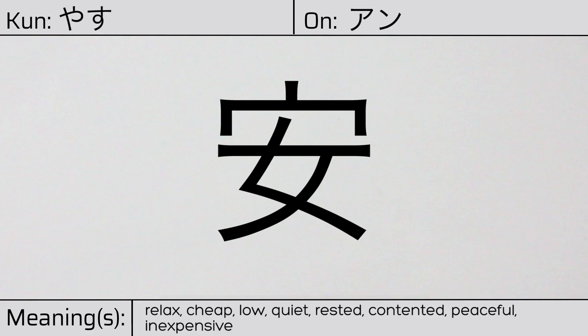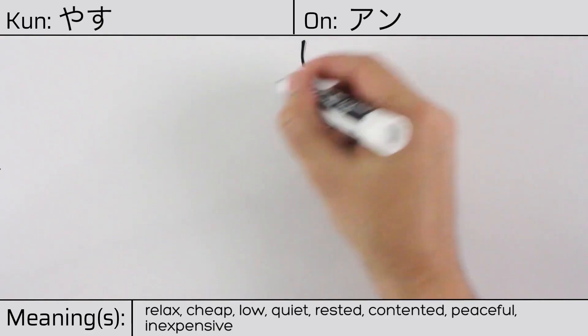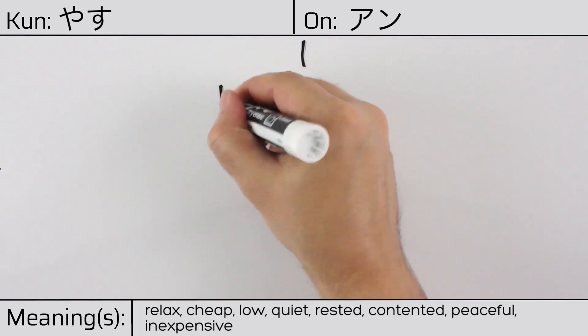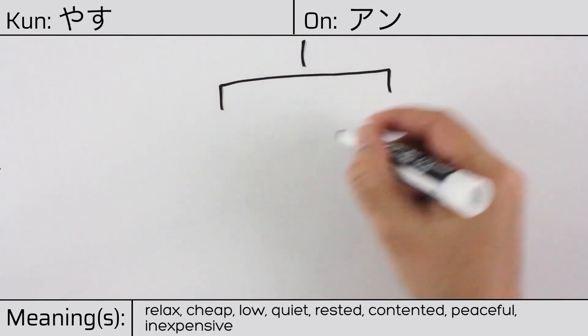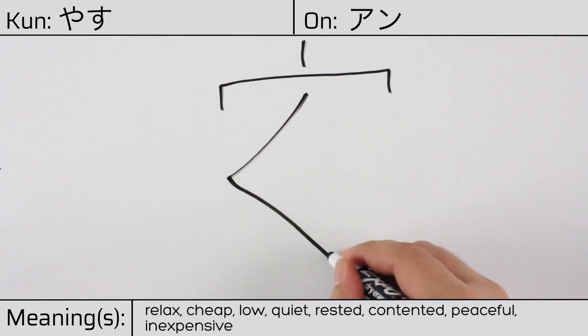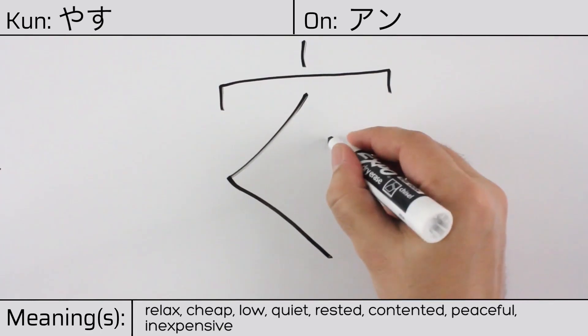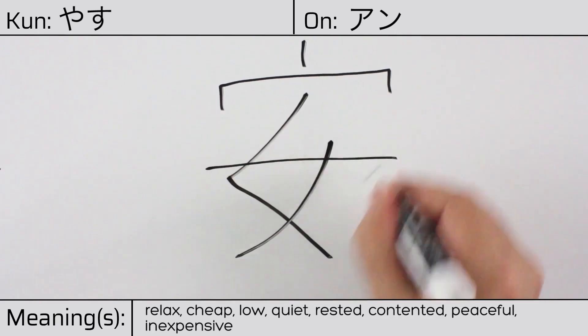Here is the stroke order: ichi, ni, san, shi, go, roku.